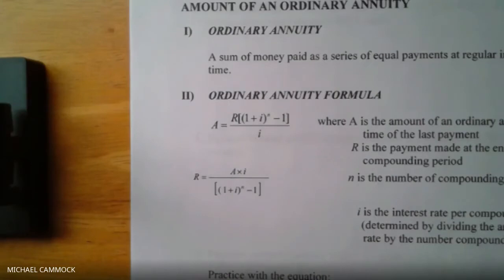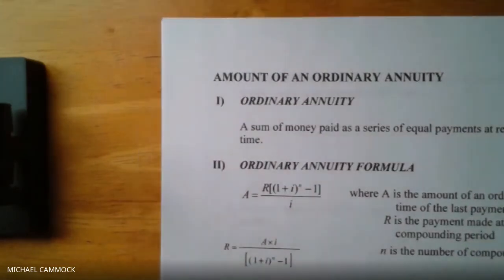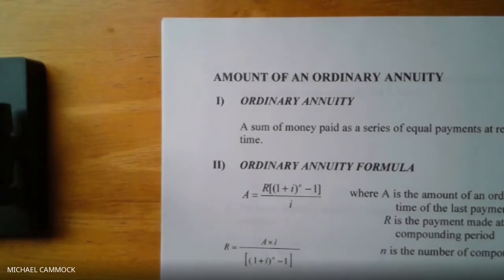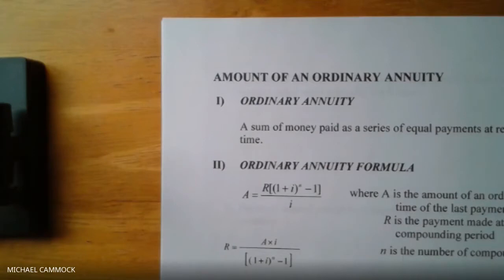An annuity is a sum of money paid out in regular payments — not put in one time, but at several intervals: maybe monthly, quarterly (four times a year), semi-annually (twice a year), or annually (once a year). In the formula, A is the amount — how much money you'll have at the end, including principal plus interest earned.